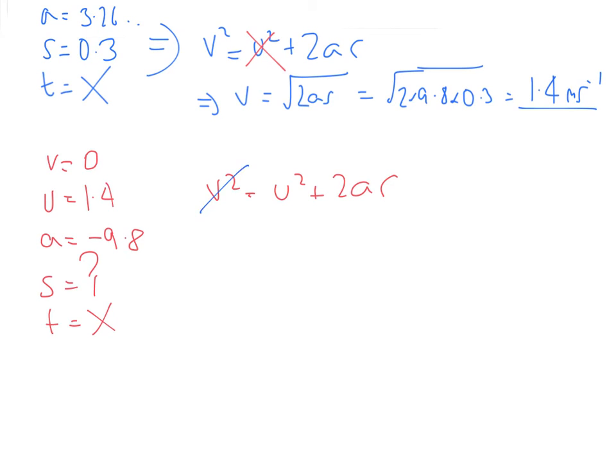We're going to still be using this equation. But this time, it's this that becomes 0. We want to calculate s. It's going to be minus u squared over 2a. So it's going to be minus 1.4 squared over 2 times minus 9.8. Your two minus signs are going to cancel out.